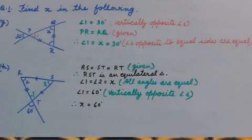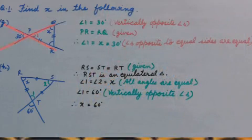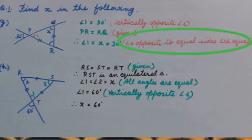Part G. Intersecting lines are given. Recall the angles formed by intersecting lines. So angle 1 equals 30 degrees - those are vertically opposite angles. In the question, PR equals RQ, which means it's an isosceles triangle. Angle 1 equals X equals 30 degrees, because in an isosceles triangle, angles opposite to equal sides are equal.